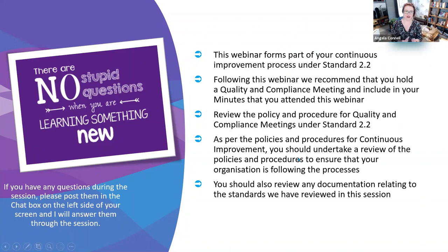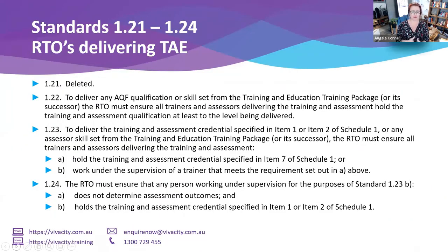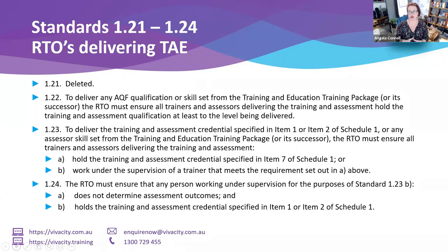Standards 1.21 to 1.24 are all about RTOs delivering TAE, meaning you have any training products on your scope around training and assessment, and also your diploma levels of training and assessment. Standard 1.21 is no longer relevant, but in order to deliver any of the TAE training products you need to make sure that you meet certain requirements. I'd like to know — does anybody online today have TAE on their scope, or are thinking about putting it on scope?